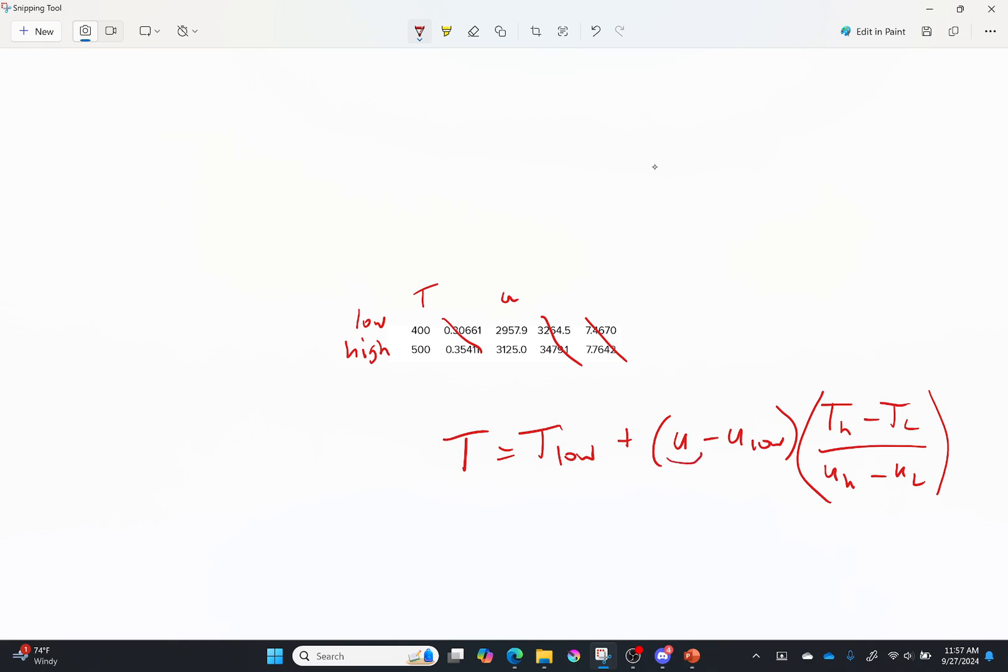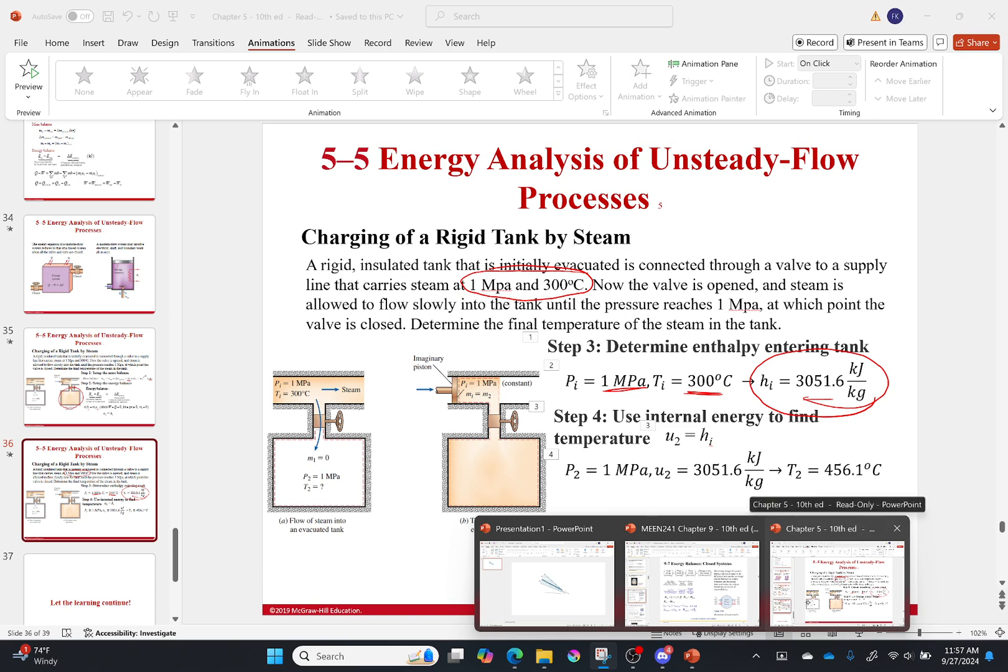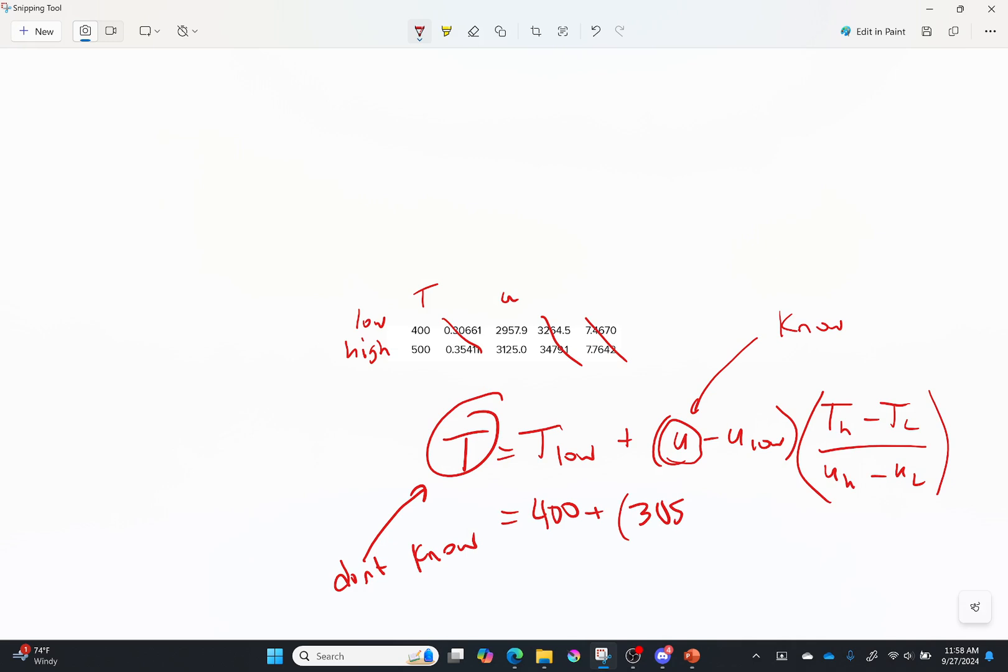Okay, other things. This is the part that you know. I know this. So, always put what you know right there. I know the internal energy. This is the thing I don't know. Put that one there. And this equation will work for any kind of interpolation you want. Now, if I plug all these numbers in, I'll just go ahead and write them out. We'll get the following numbers. Okay, so I have 400 plus U minus U low, which I forgot what U low is. I'll go ahead and pull it out here. That was 3051.6. Okay, big numbers. Minus U low, which is 2957, times T high minus T low, which I already know is 100. I'm just going to say that's 500 minus 400 over U high minus U low. Don't want to try to do that math in my head. I'll just write it out. There you go.